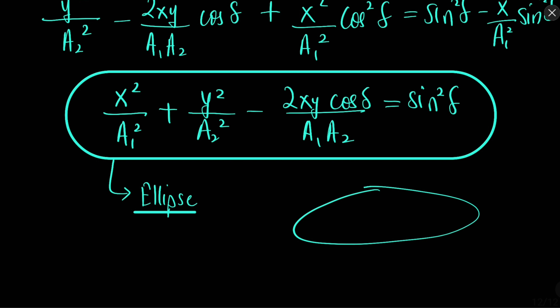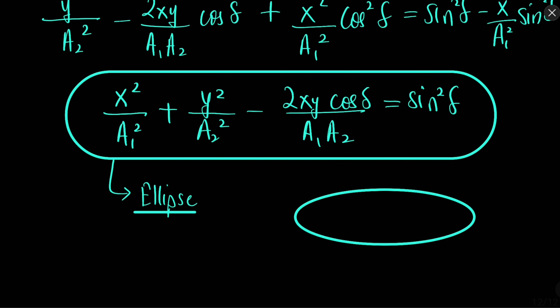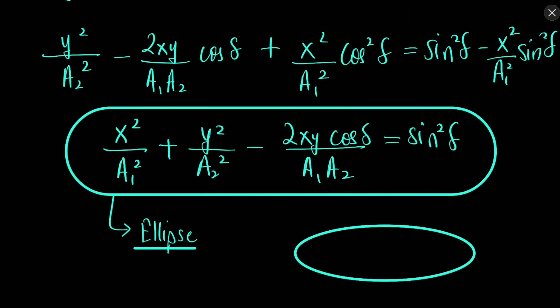An ellipse is a shape like this. When we have two SHMs which are perpendicular to each other, their resultant traces an ellipse. Obviously you can put various values of δ and get various types of ellipses — for δ = π/2, δ = 0, δ = π, etc.